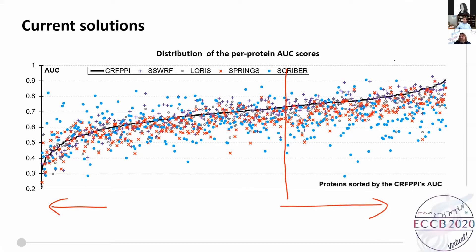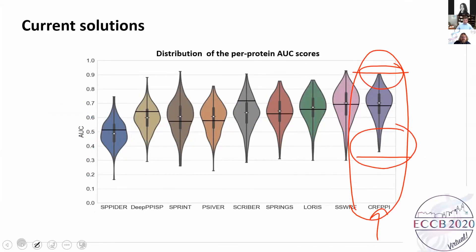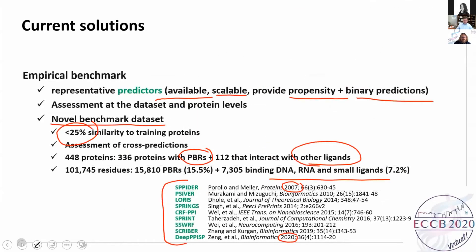We have a question: how scalable is the method? Can it be applied to whole genomes or metagenomes? Part of the methodology is the calculation of a specific predictor called SCRIBER, which takes about two to three minutes per protein. The rest is just running the regression. Our server has a limit of five proteins at a single run. We do allow batch predictions but on a smaller scale. If you want to do the whole genome, it's not impossible but it's going to be rather challenging — we can do probably hundreds of proteins, but not thousands.